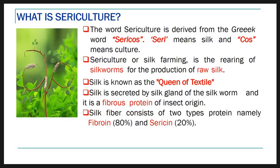Silk is secreted by the silk gland of the silkworm, and it is a fibrous protein of insect origin. The main composition of silk is protein. There are two types of proteins: fibroin and sericin. Fibroin contributes 80 percent and sericin contributes 20 percent. Then we move towards moriculture.